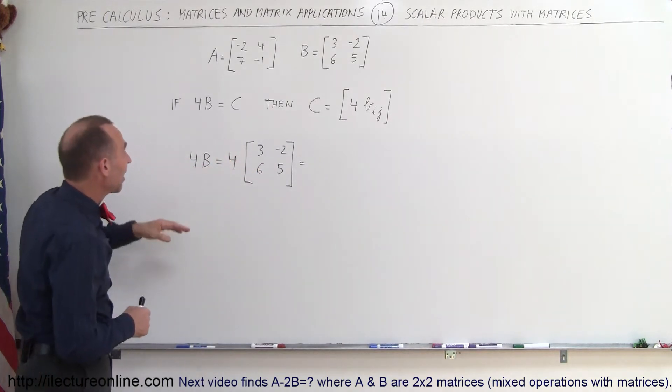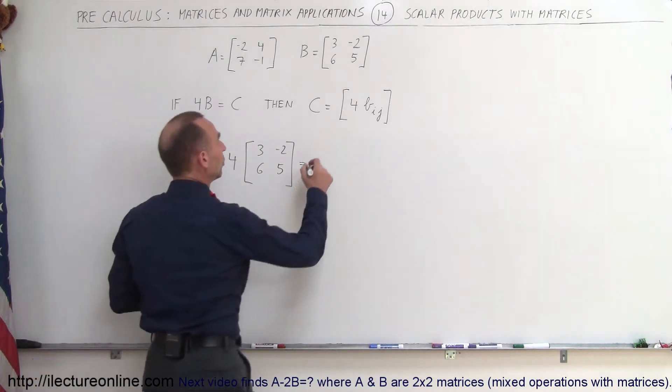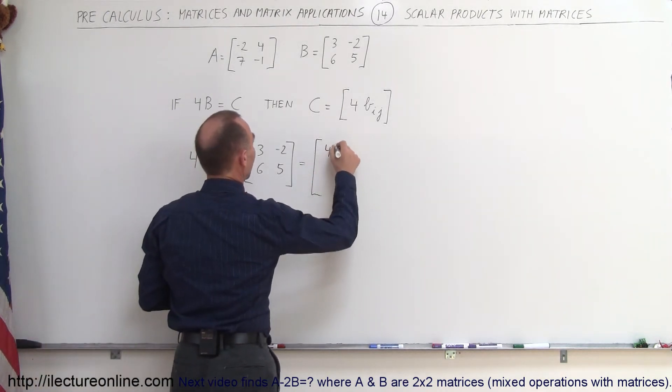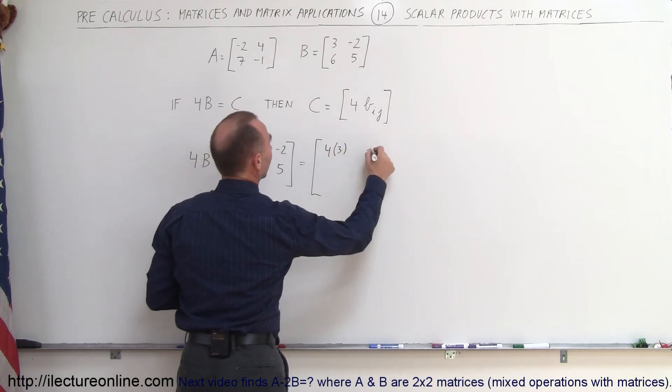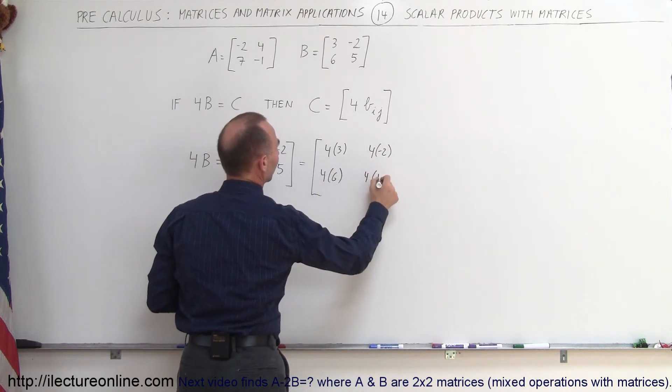To illustrate that a little bit better, here we have 4 times B is equal to 4 times this matrix, which is equal to 4 times 3, 4 times negative 2, 4 times 6, and 4 times 5.